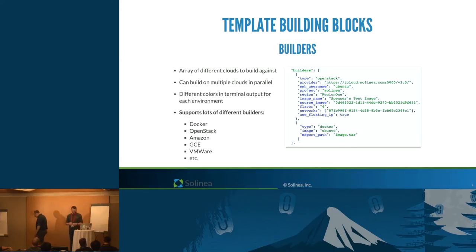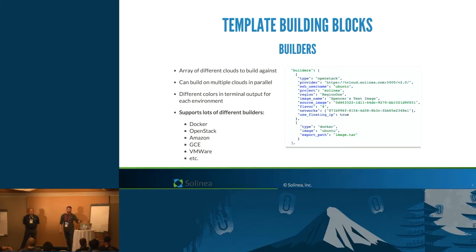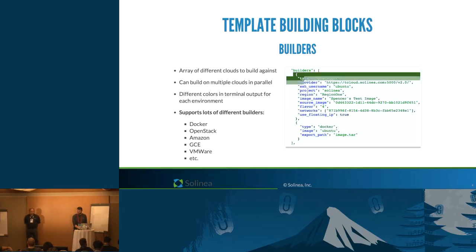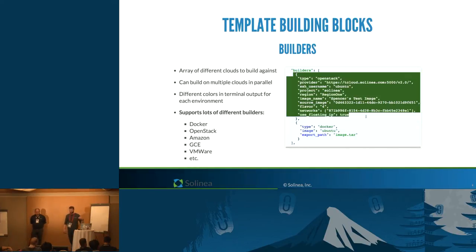The first building block is builders — required in your templates every time. You've got to have some cloud to build against, and it can be multiple clouds at the same time: a Docker image, an OpenStack VM, Amazon, Google Compute Engine, VMware. The code block on the right is what I actually use to talk to our OpenStack test cloud. You'll also see a Docker type — you can base it off a Ubuntu image, export it as a tar, and take it wherever you want.